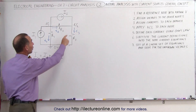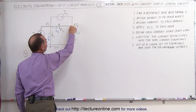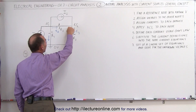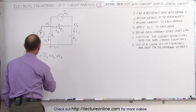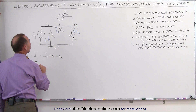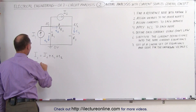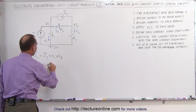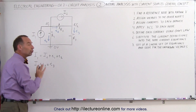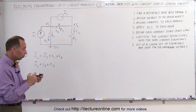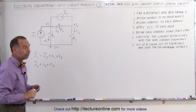On the second node, we have capital I2 entering and small i2 entering, while small i3 is leaving. So all currents entering — capital I2 plus small i2 — must equal all currents leaving, which is small i3. We now have our two equations to solve this particular circuit.